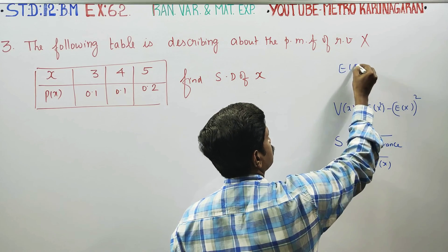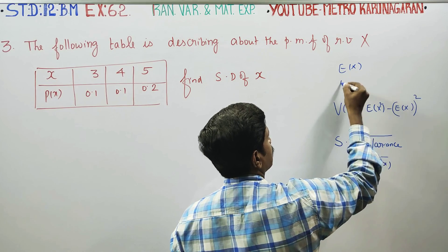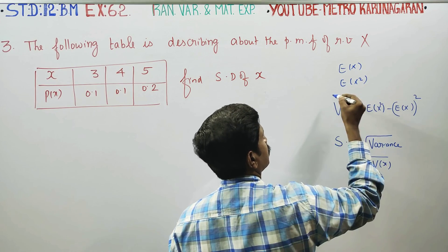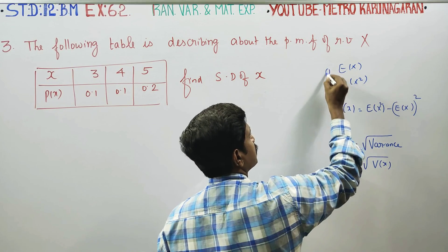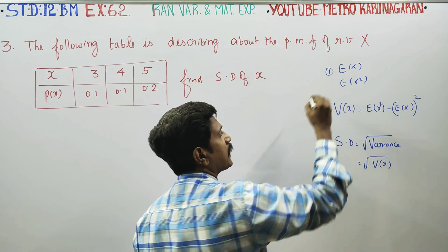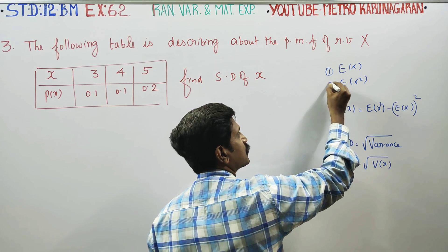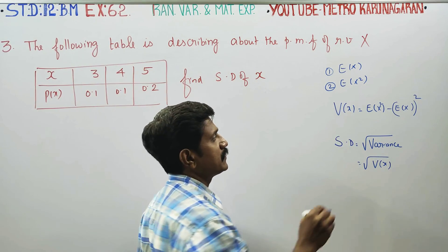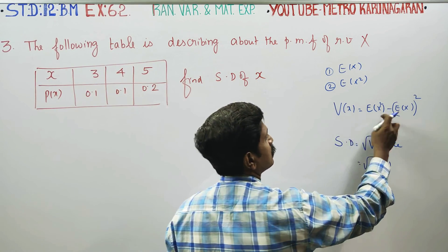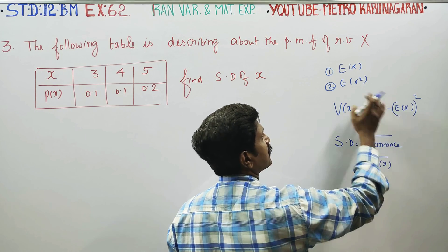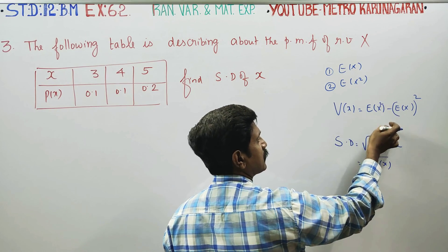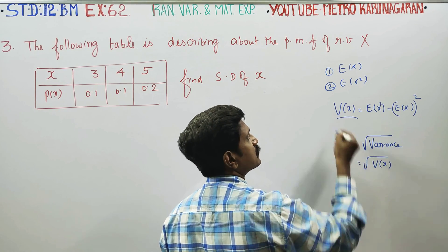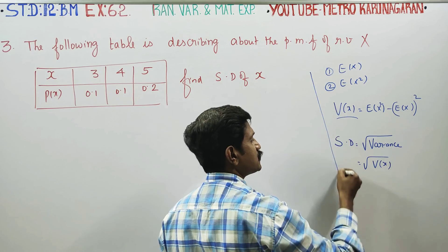First find expectation of X, then find expectation of X squared. Then square the expectation of X value, subtract it, get variance. Take the square root of that to get standard deviation. That is the procedure.